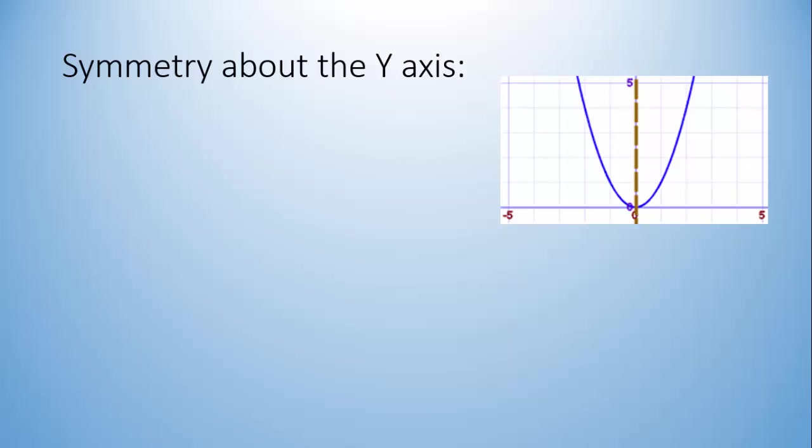The definition of symmetry about the y-axis is that for any point on the graph (x,y), there must also be a point on the graph that's (-x,y).